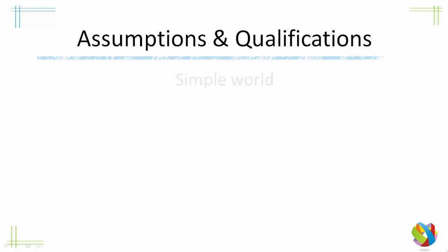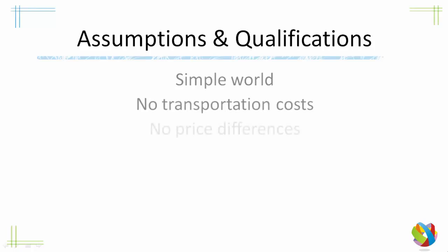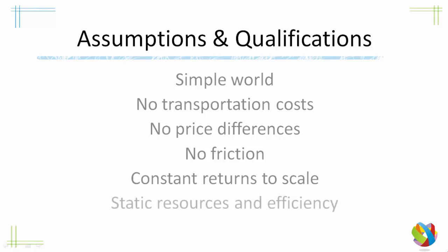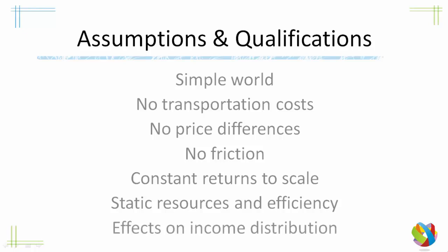Comparative advantage is based on some assumptions and qualifications. Firstly, that we live in a simple world with no transportation costs, no price differences, no friction of movement between resources, constant returns to scale, static resources and efficiency, and we don't talk about effects on income distribution either. We'll deal with these one at a time — some don't need much explanation, others will require more detail.